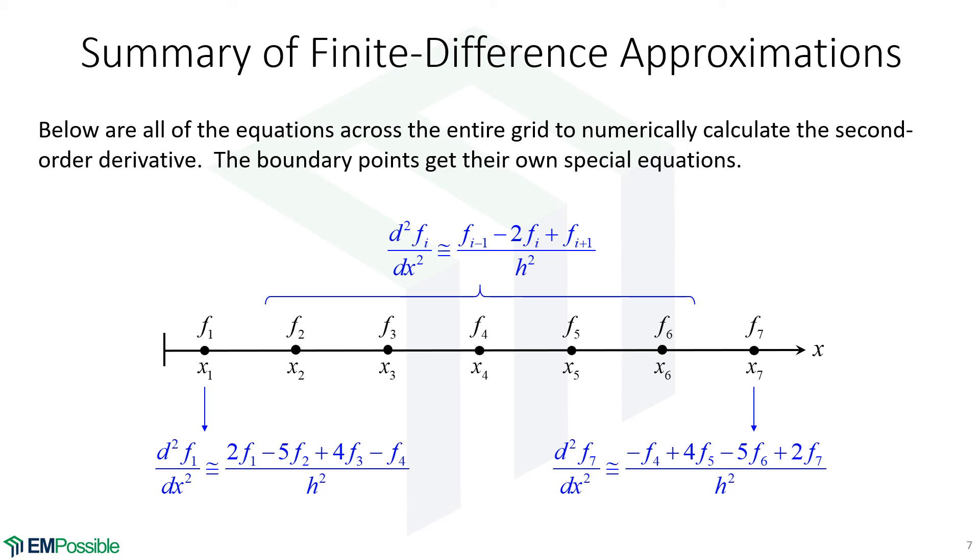So we could summarize our whole way of calculating a numerical derivative, numerical differentiation this way. We could write this is the finite difference approximation we're using for all of the interior points, and here's the two finite difference approximations we're using for the first and the last points. The points at the edge always seem to get their own special finite difference equation.